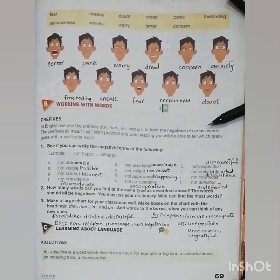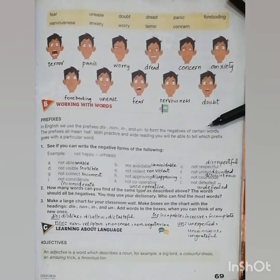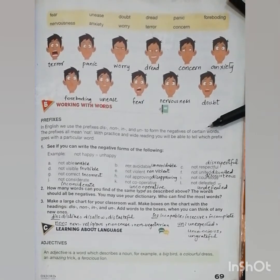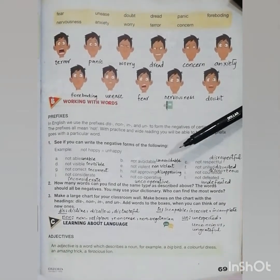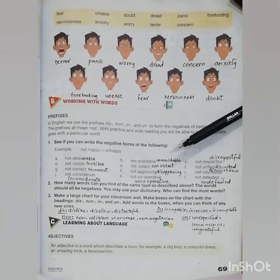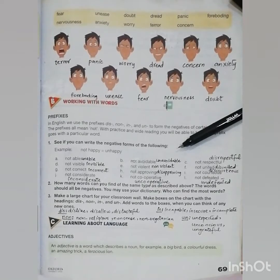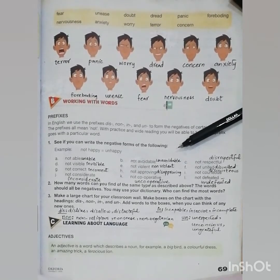Prefixes are the words which can be added before the root word, before the main word, to make the word negative. So here is the exercise, question number one. See if you can write the negative forms of the following. So here is the word 'not happy' which will become 'unhappy' after adding the prefix un before the word happy.